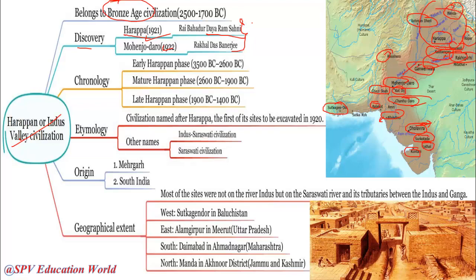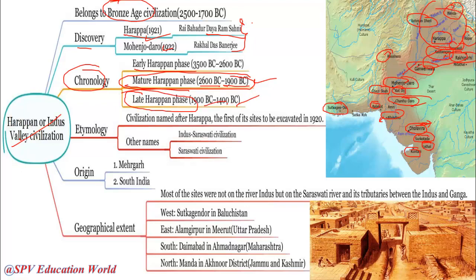Now we shall see the chronology. The Harappan Civilization is divided into several phases: the Early Harappan Phase from 3500 BC to 2600 BC, and the Mature Harappan Phase from 2600 BC to 1900 BC — we mostly discuss the Mature Harappan period, where we have the most evidence. The Late Harappan Phase is from 1900 BC to 1400 BC.